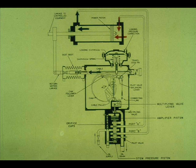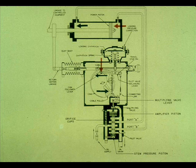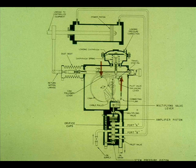The return motion linkage also moves right to left. The cable makes the cam rotate counterclockwise. The cam follower lever lowers. The pilot valve balancing lever rotates. The left end lowers. The right end raises. This repositions the multiplying valve, which repositions the pilot valve. The system is rebalanced.